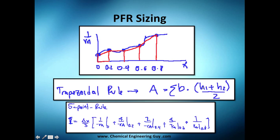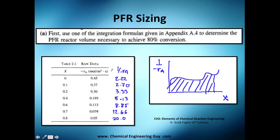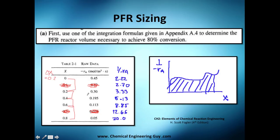The five-point rule (Simpson's rule) mentioned in the book is a bit complex. It requires equally-spaced intervals. For example, if I choose delta X = 0.2, I can use 0, 0.2, 0.4, 0.6, 0.8 — but data points at 0.1 or 0.7 have to be discarded. That means I'm throwing away valuable experimental data just to satisfy the method's spacing requirement.